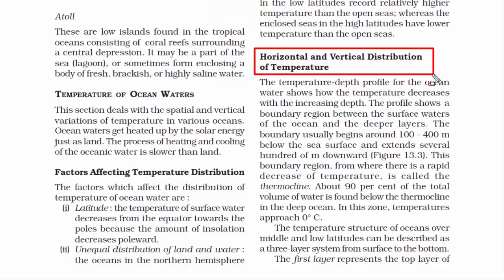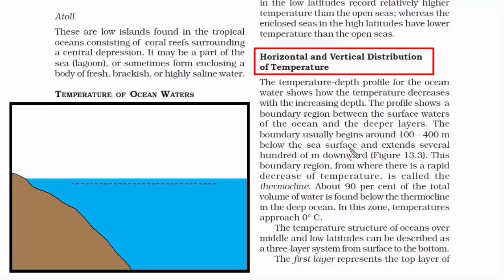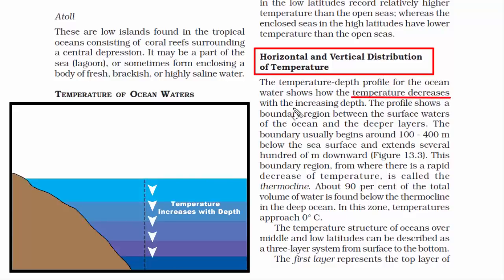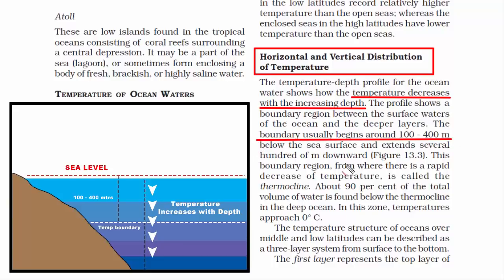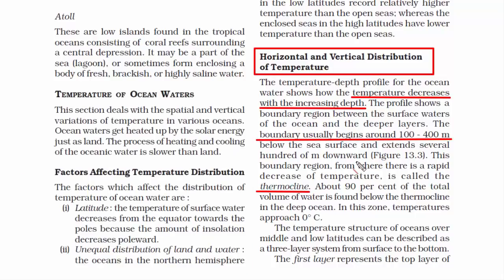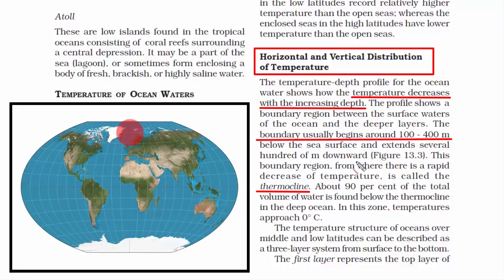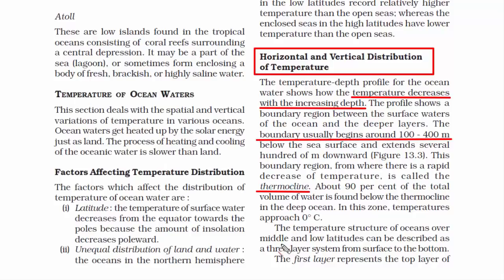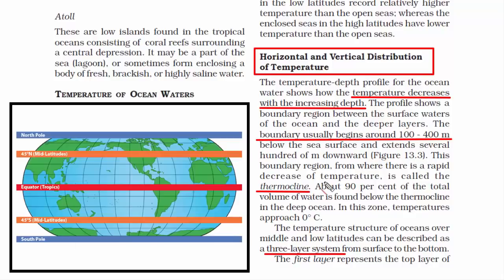Now we're going to look at horizontal and vertical distribution of temperature. Horizontal distribution means variation across the surface. We also know that temperature decreases as depth increases. If you jump into an ocean, there is a boundary between the surface water and the deeper layers where you feel the temperature falling tremendously. That boundary begins around 100 to 400 meters below sea level, and is called the thermocline. About 90% of the total volume of water is found below the thermocline in the deep ocean.